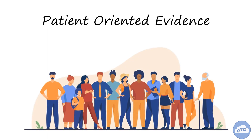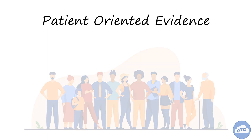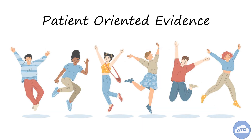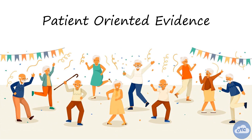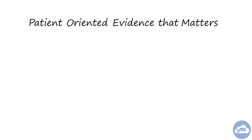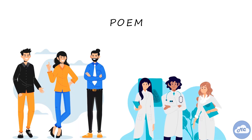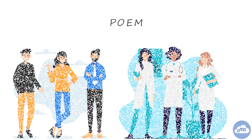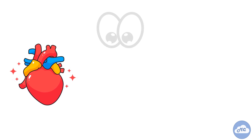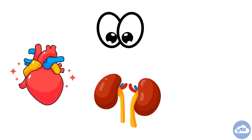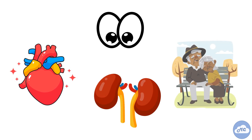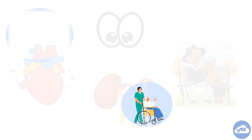On the other hand, patient-oriented evidence measures outcomes that patients care about, such as quality of life and quantity of life. Patient-oriented evidence that matters, or POEM, measures outcomes that patients and clinicians care about. Examples include cardiovascular events like heart attack or stroke, vision loss, kidney failure, or quality of life. When making patient care decisions, we want to use evidence that is patient-oriented as much as possible.